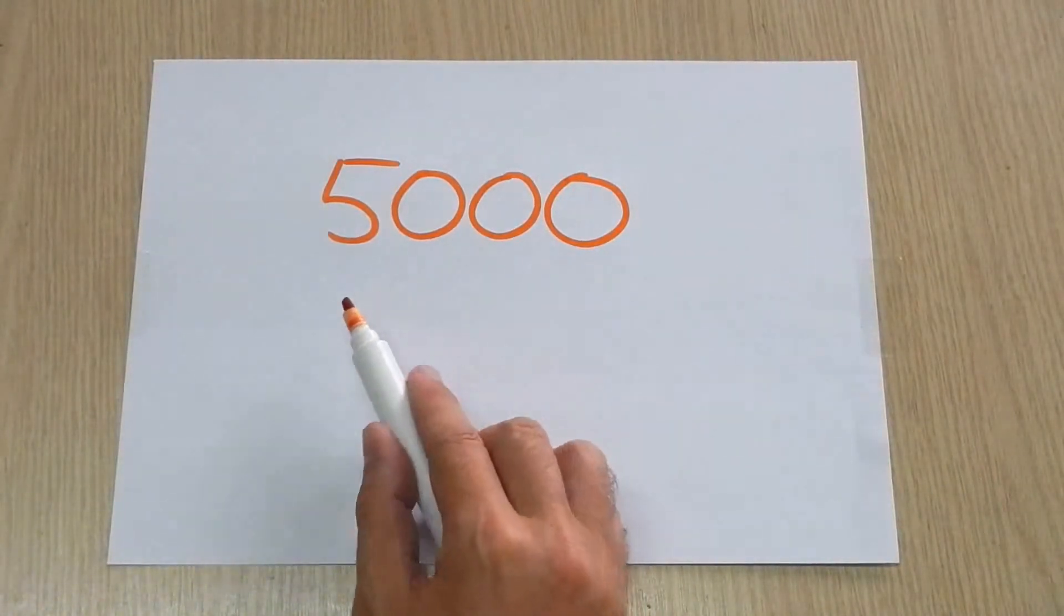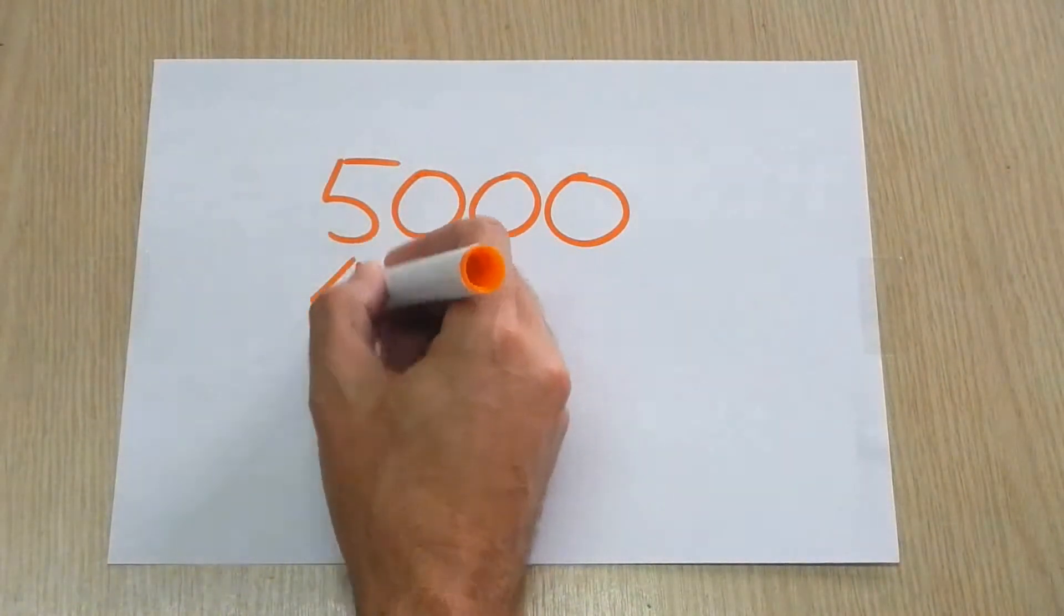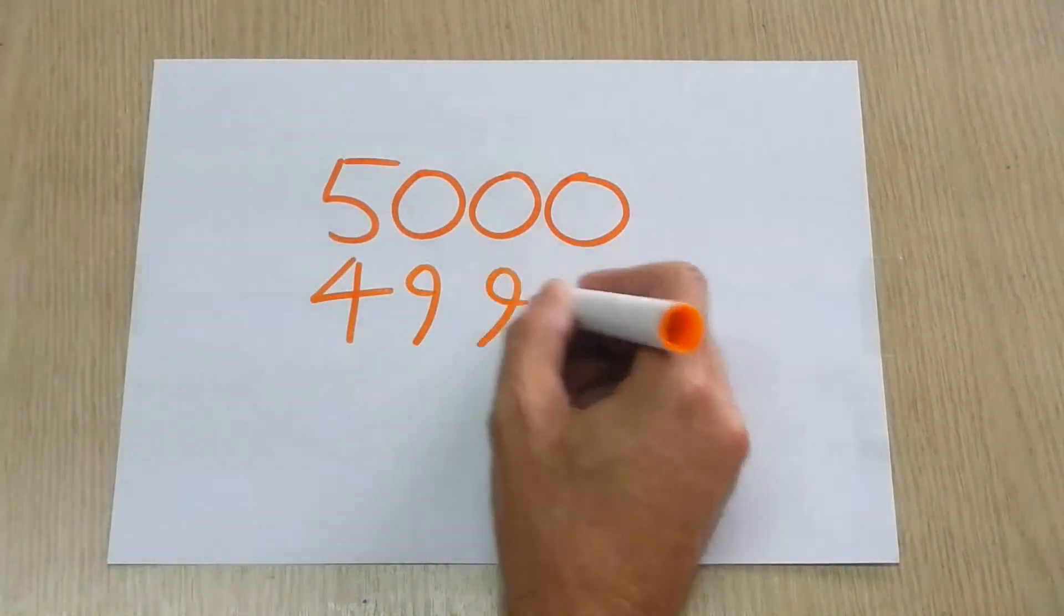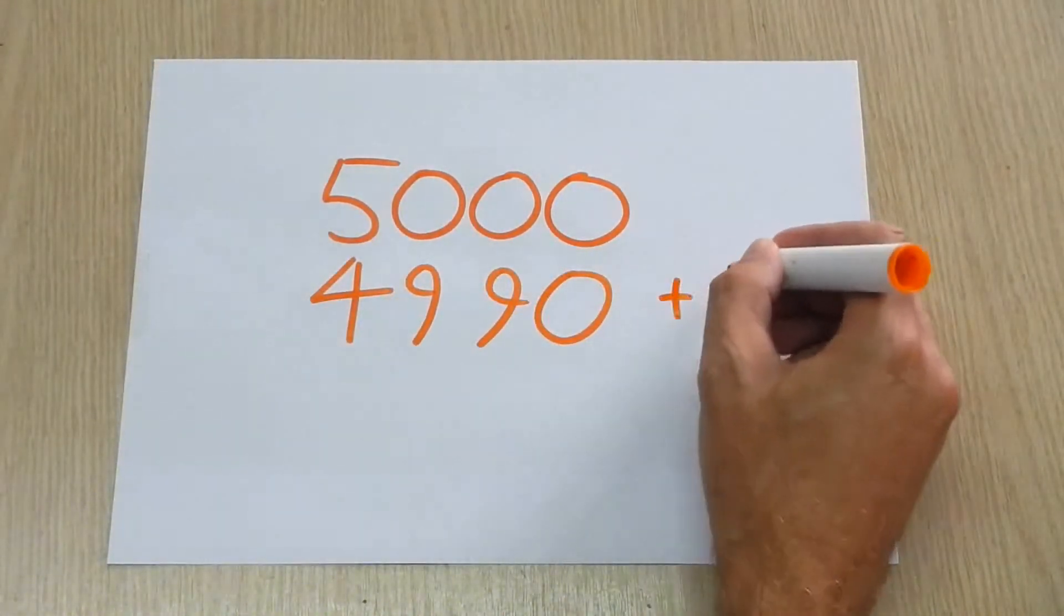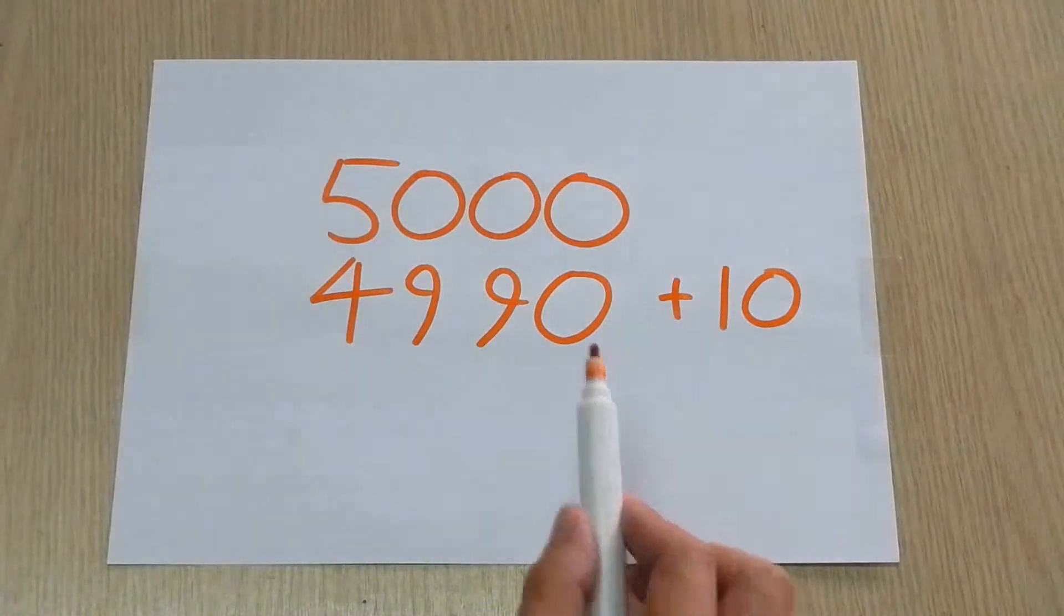So what we're saying is that a big number like this can be converted into a number like this, plus 10. That way we've got 9's and 4's that we can take away from, which are easier than taking away from zeros.